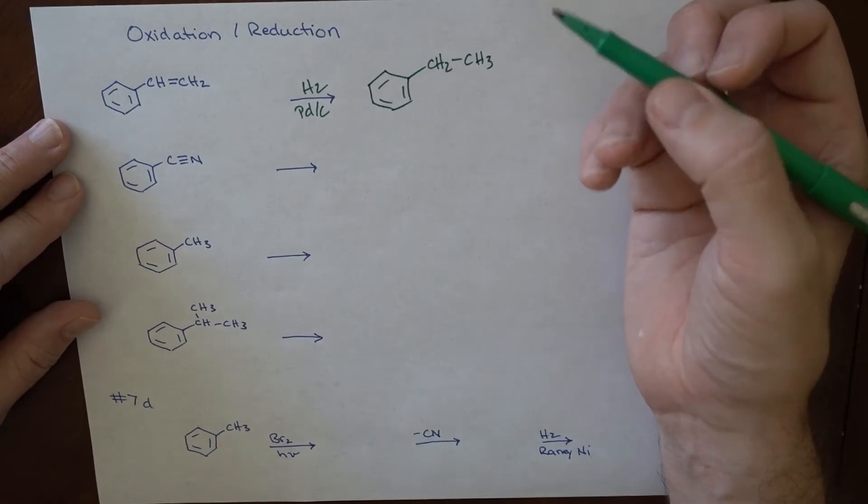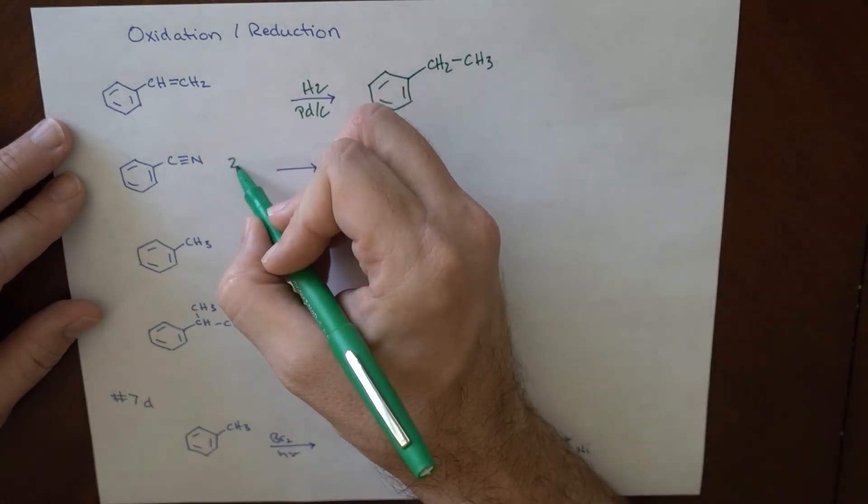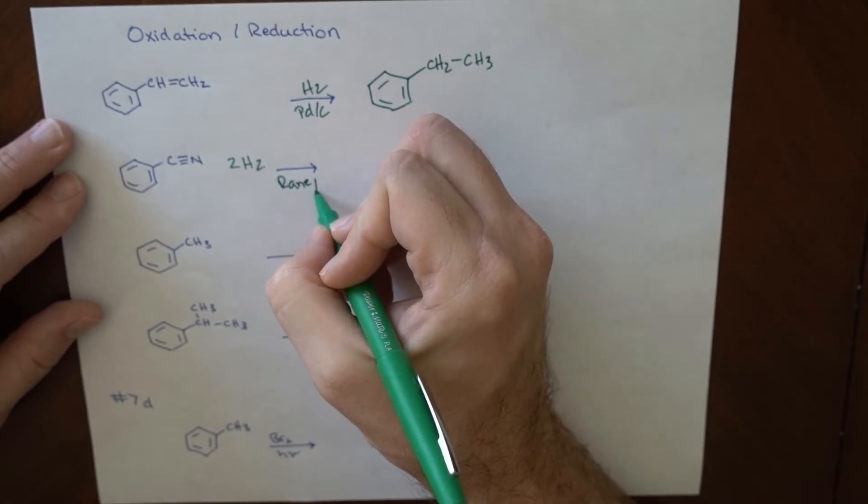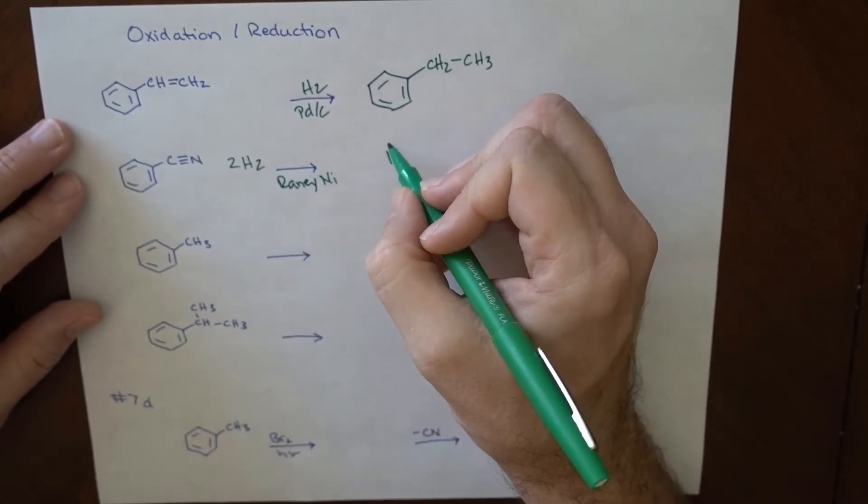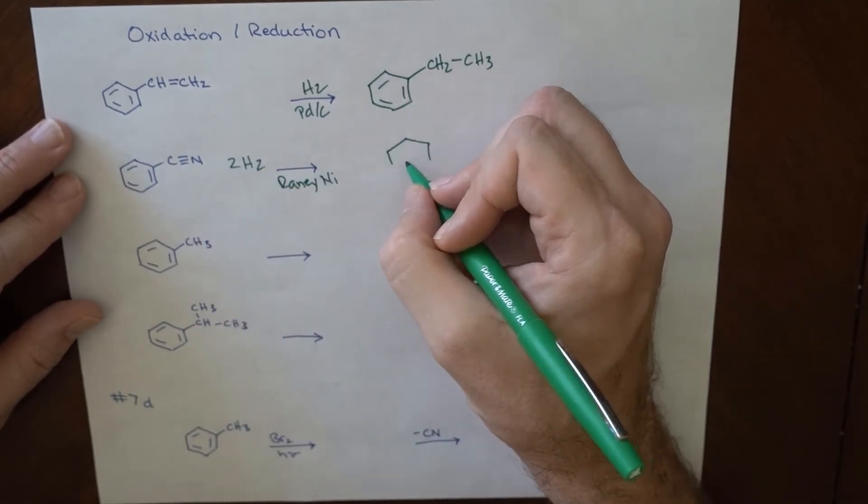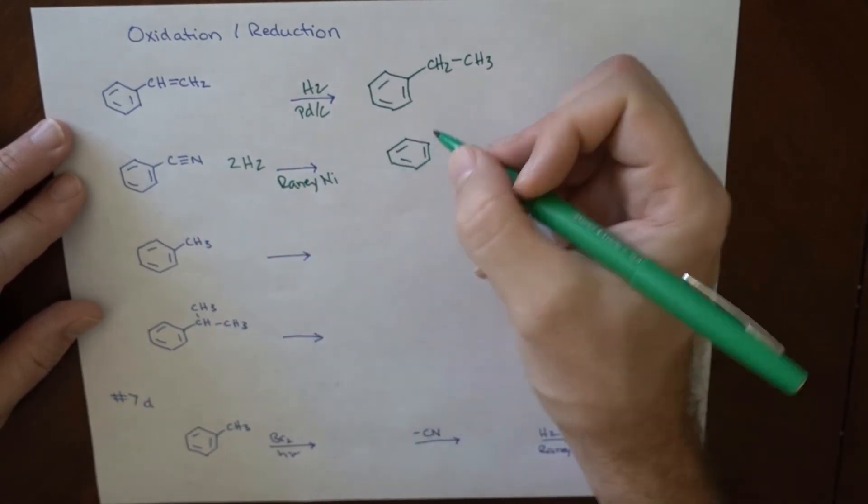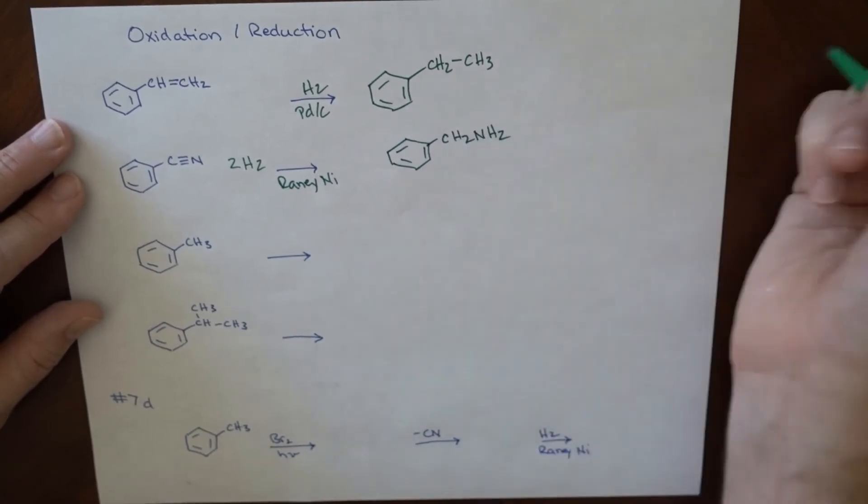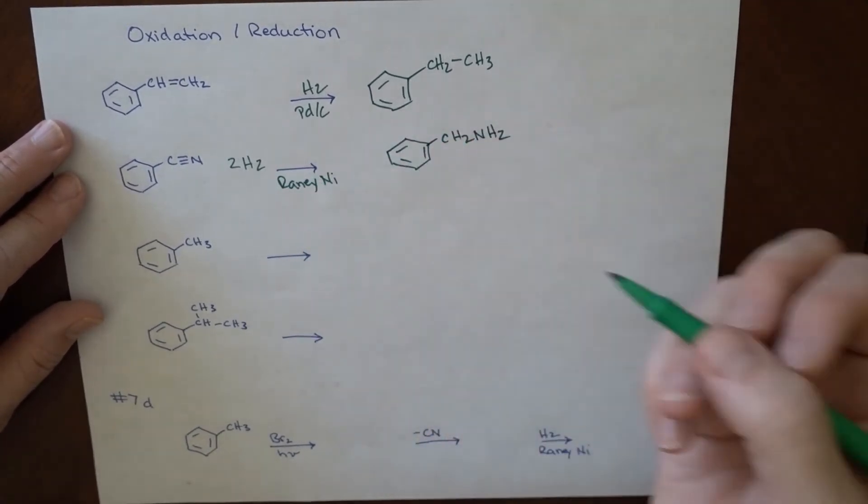We can do the same thing with Raney nickel. So if we have two equivalents of hydrogen over Raney nickel, then this becomes a CH2 and this will become an NH2. So we've kind of fully reduced it. Every place where there was multiple bonds now has hydrogens on it.